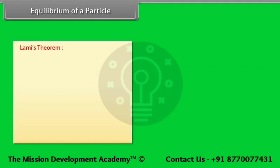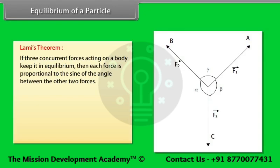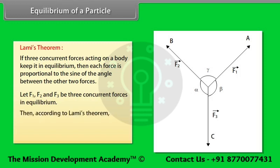Lamy's theorem states that if three concurrent forces acting on a body keep it in equilibrium, then each force is proportional to the sine of the angle between the other two forces. For three concurrent forces F1, F2, and F3 in equilibrium: F1/sin α = F2/sin β = F3/sin γ.